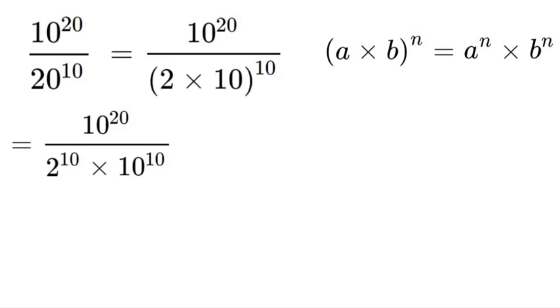Now what we can do is factor this out a little bit or split up the multiplication. We would then have 1 over 2 to the power of 10 times 10 to the power of 20 over 10 to the power of 10.